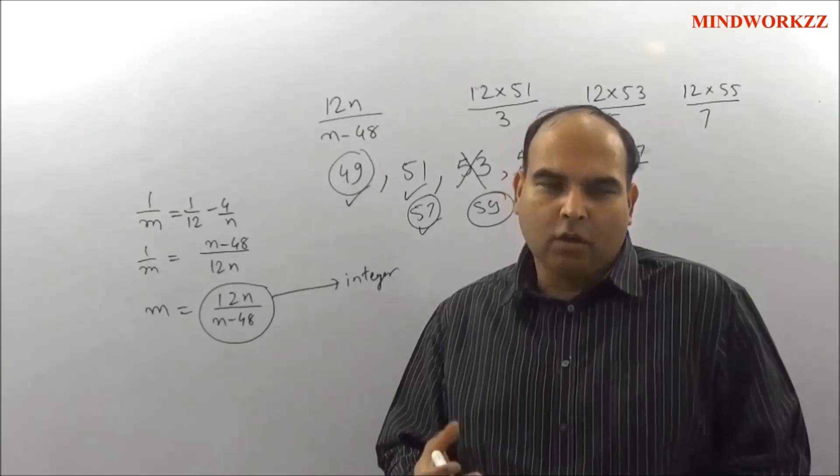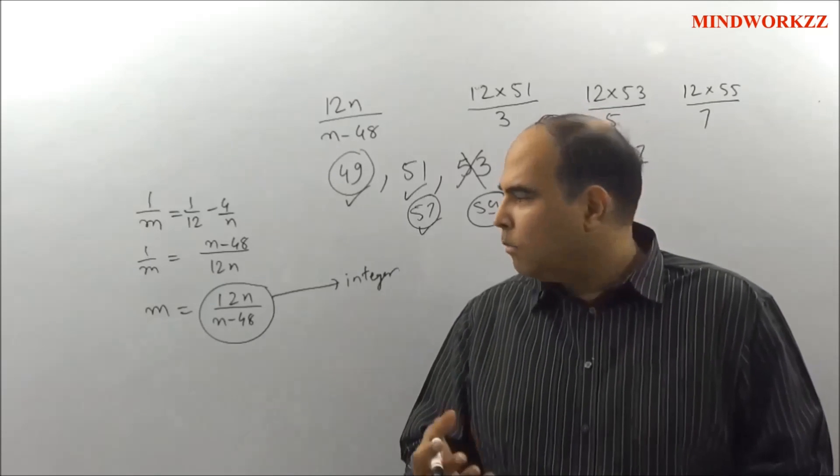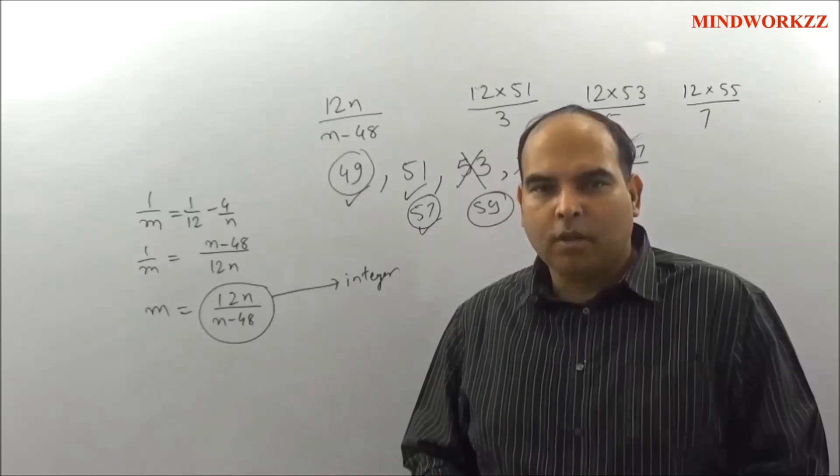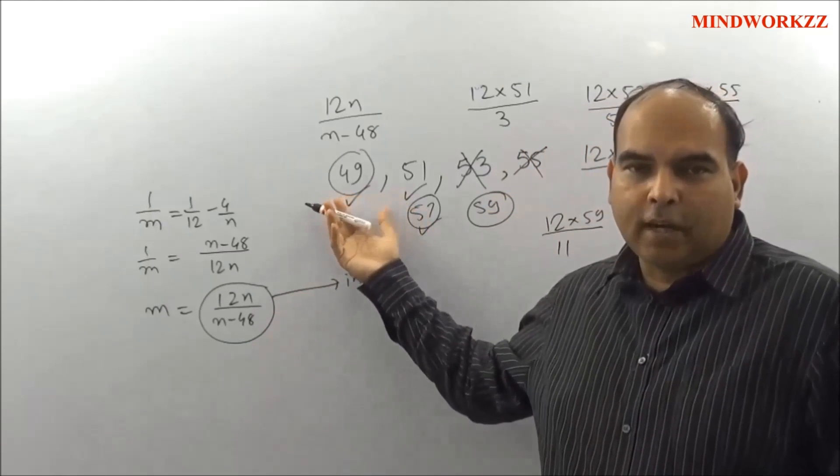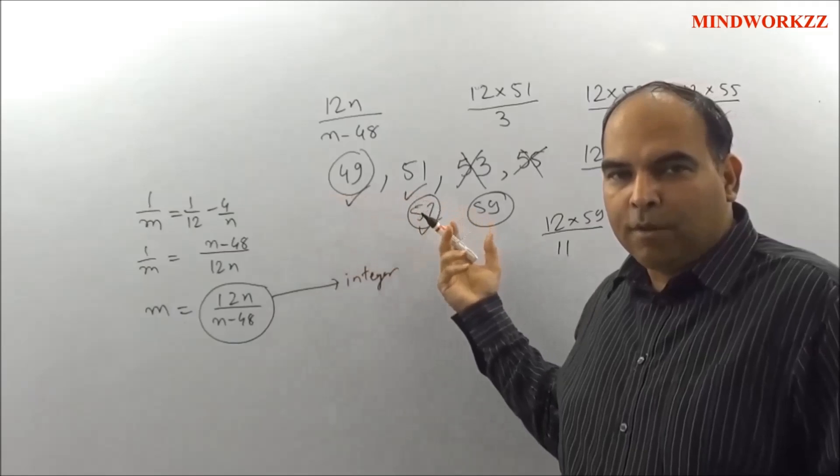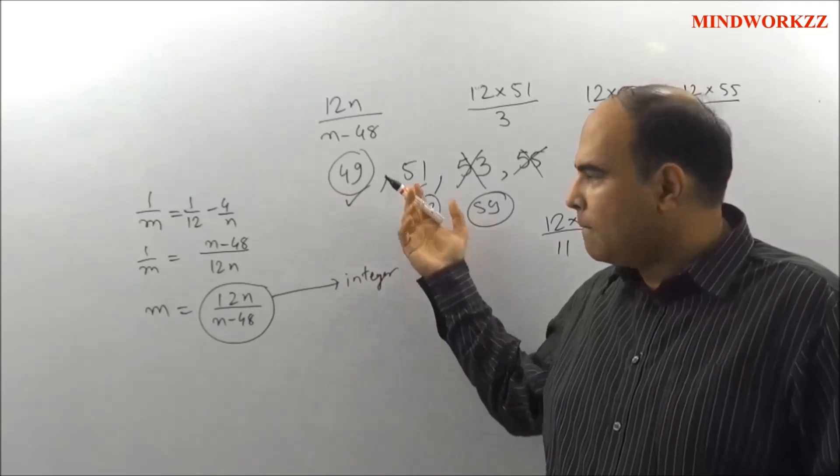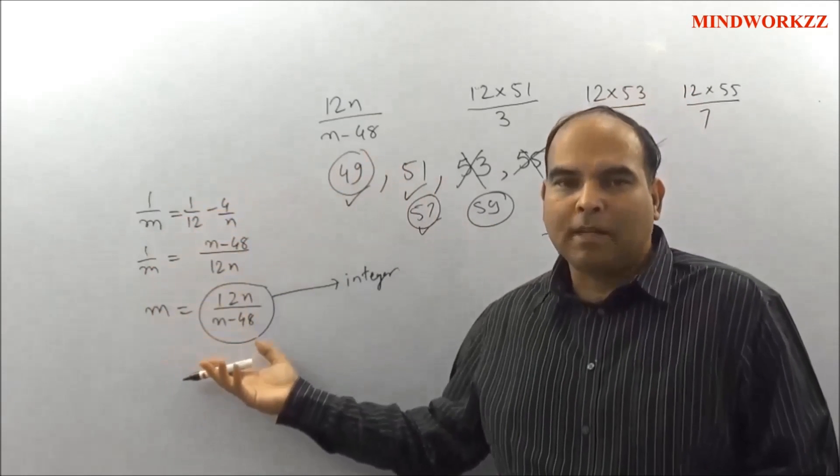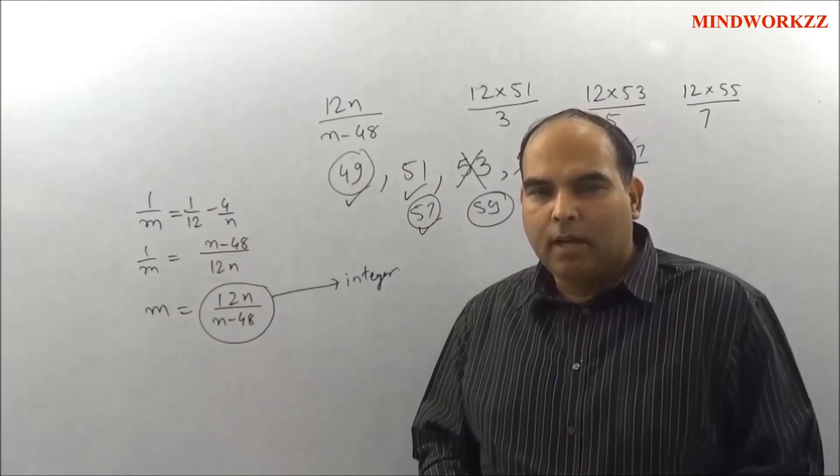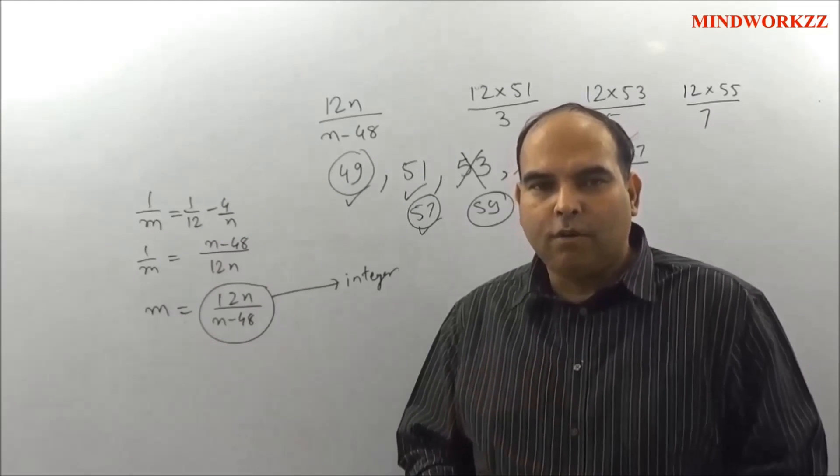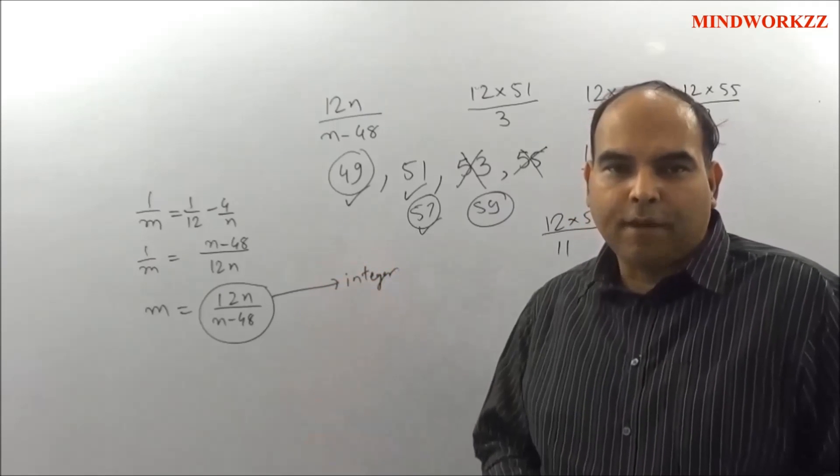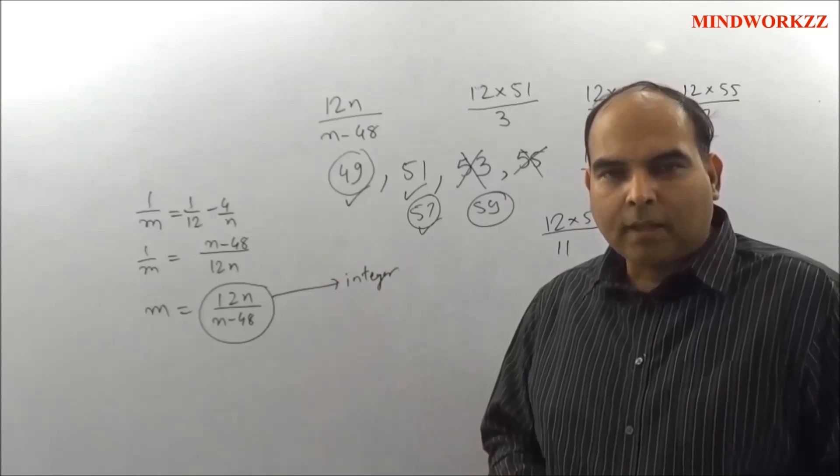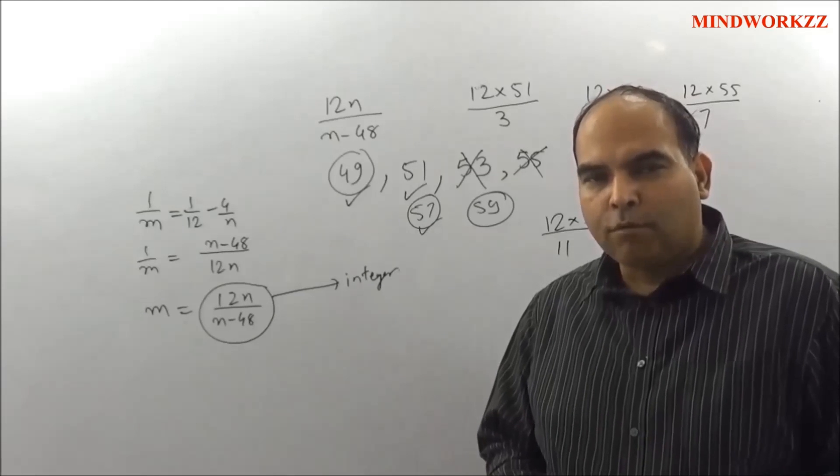Pretty simple question, although a lot of people get over-tangled in solving this. But the solving time for this should not be more than 30-40 seconds because the first realization is a 5-second realization that the value of n should be between 49 and 59. The second realization, this transformation, is maximum 10-15 seconds, and then the check with each value will not take you more than 2-3 seconds each. It should be a 30-40 seconds time frame where you should get this answer. Thanks a lot, I'll see you soon with more videos on this series.